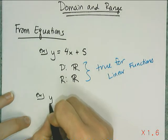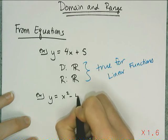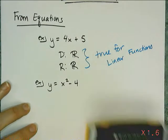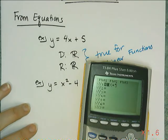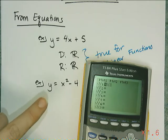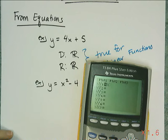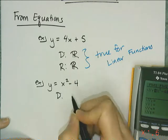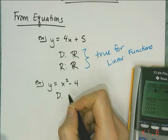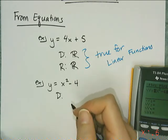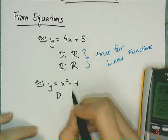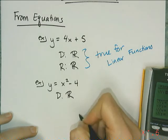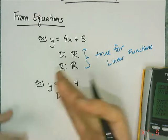Let's look at the equation y equals x squared minus 4. Quadratics are more interesting because those graphs are parabolas — the u-shaped graphs, either smiley face u's or upside down u's. For the domain, is there a number in the real number line that I can't square and subtract 4 from? There's not. So the domain is going to be all reals, and that's true for all quadratics.